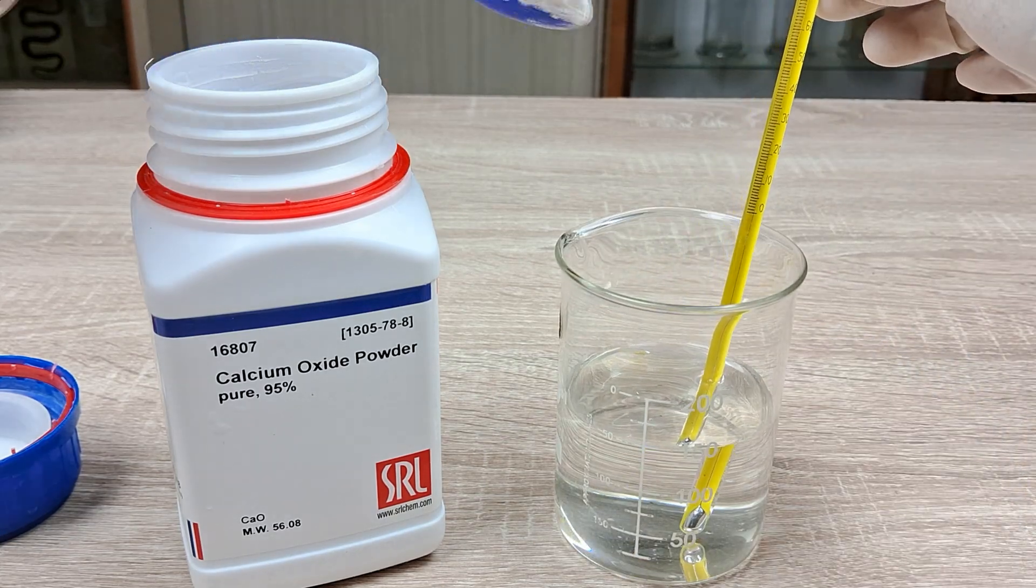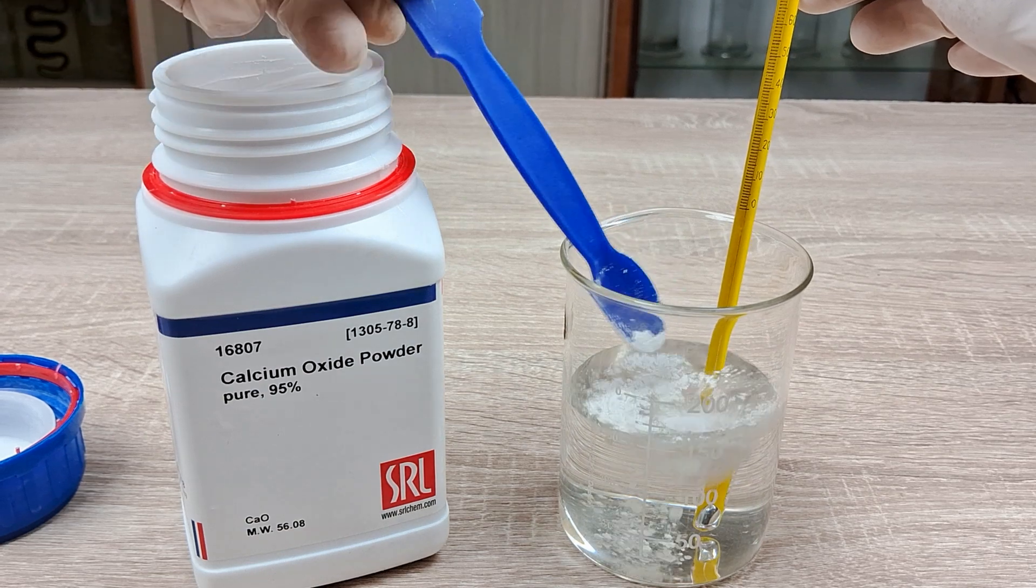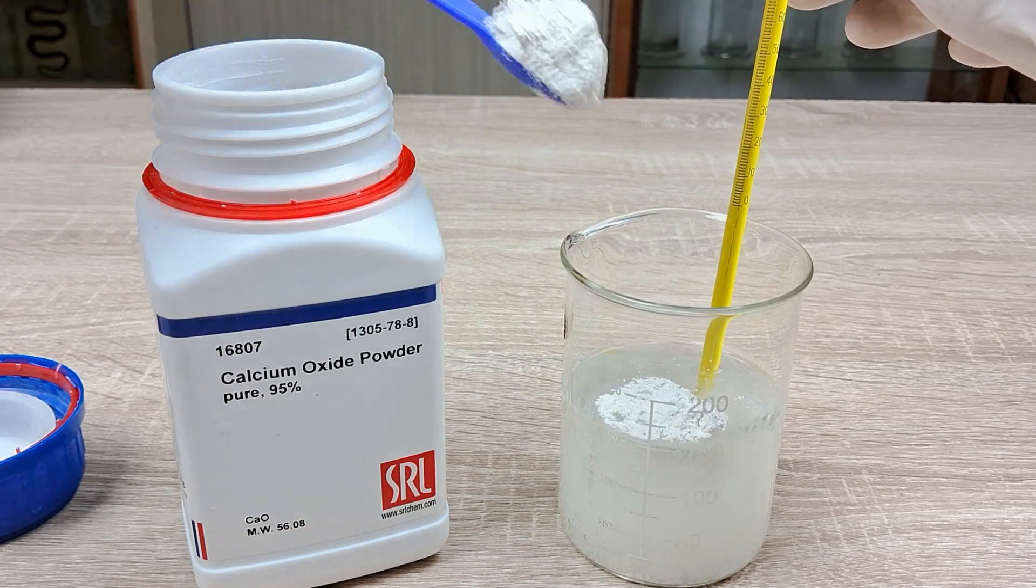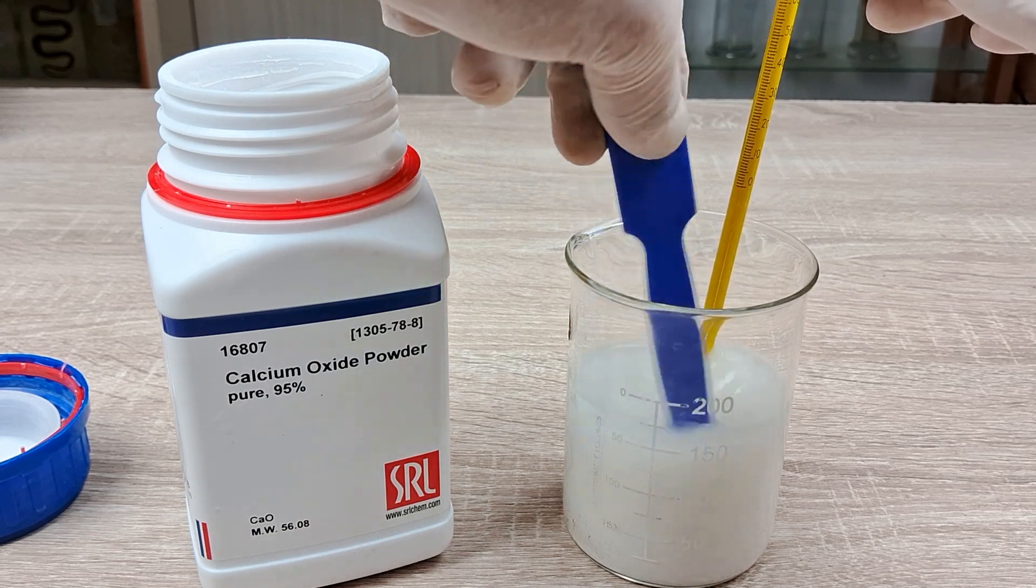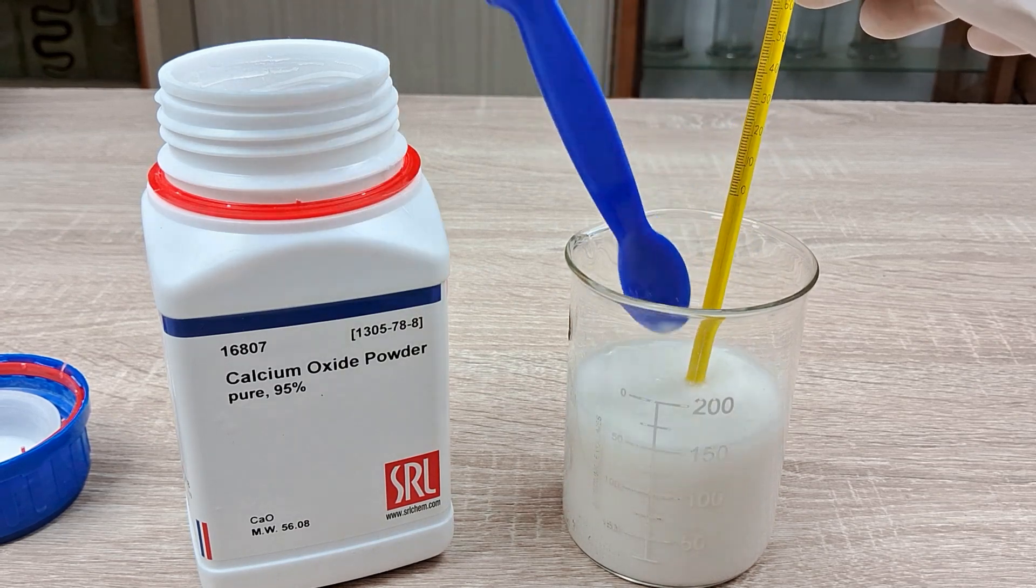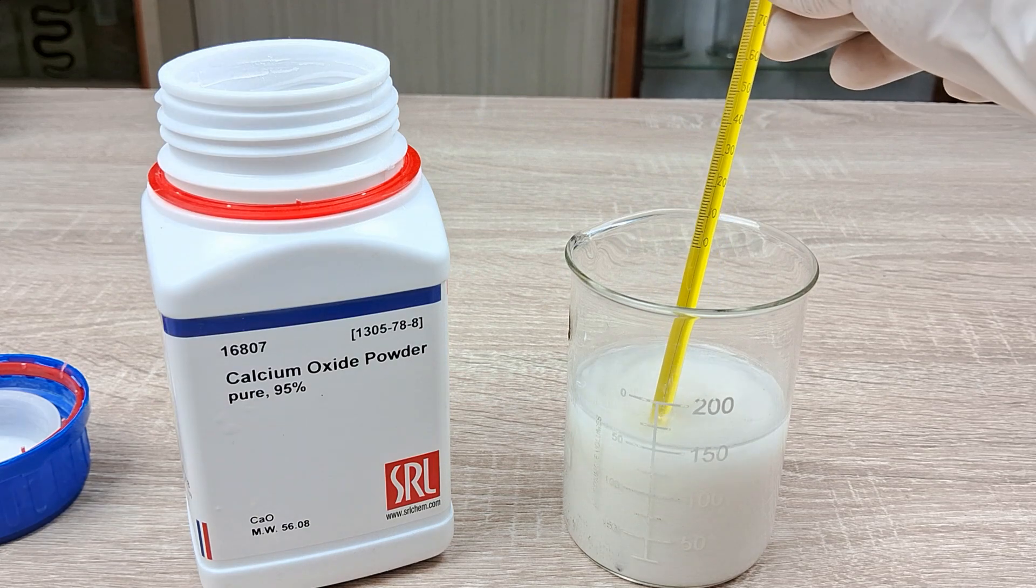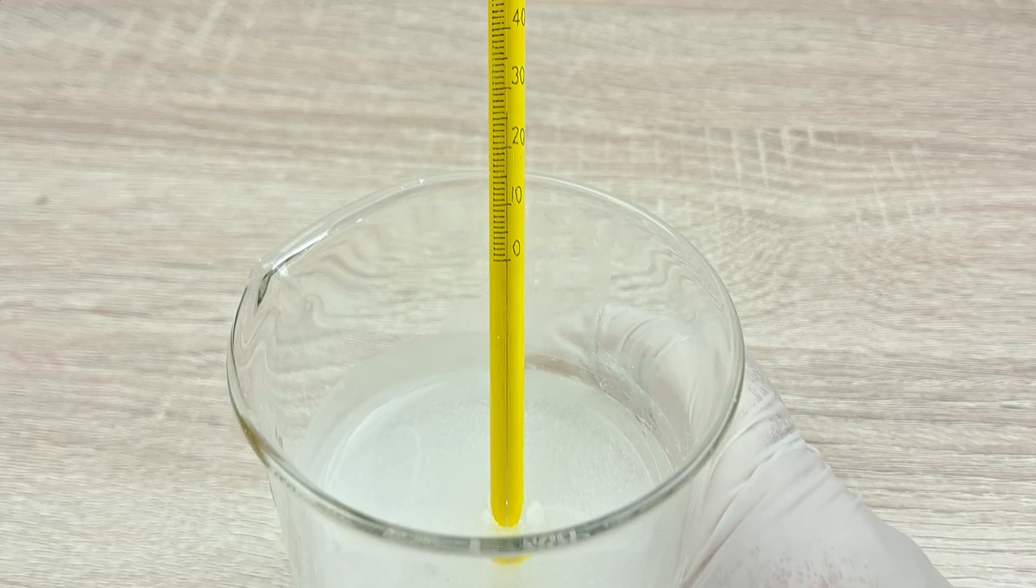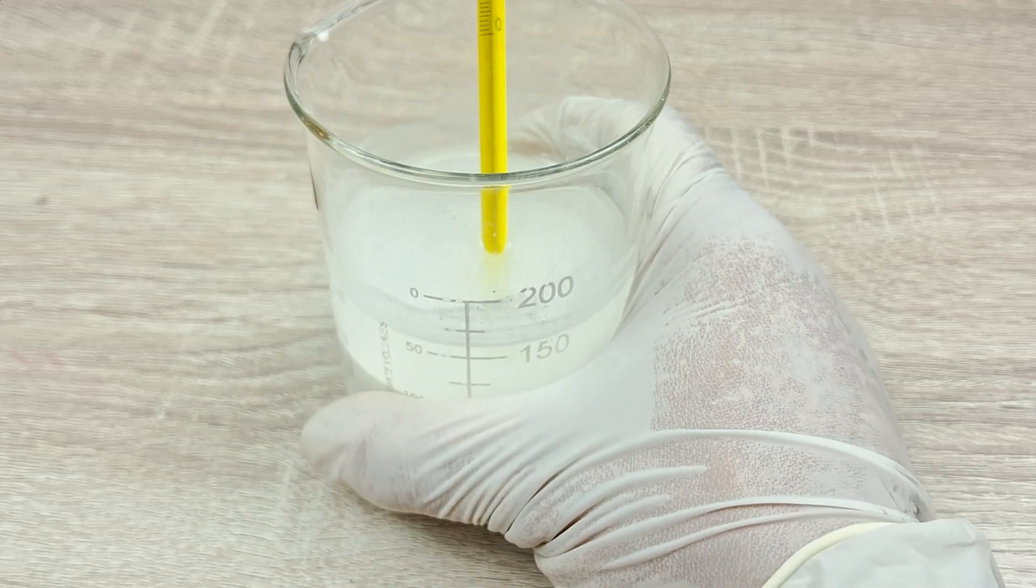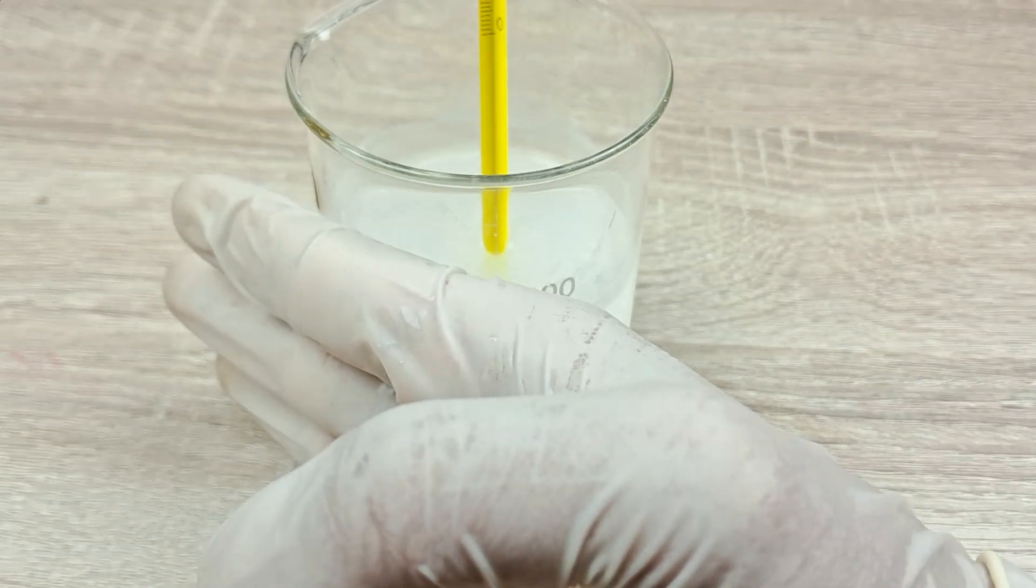Now add a few spatulas of calcium oxide to the water in the beaker and stir briefly. Wait a few seconds for the reaction to commence and then record the temperature of the solution again. You can also touch the side of the beaker with the palm of your hands.